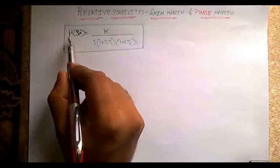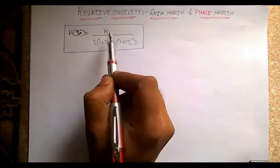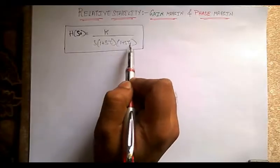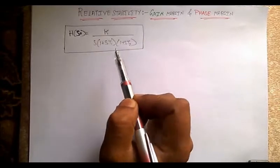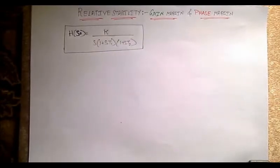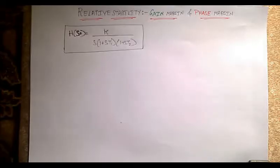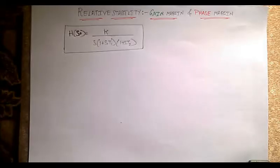Let us consider we are given the open loop transfer function G(s) = K / [s(1 + sT1)(1 + sT2)]. This represents a physical machine in an industrial plant. Let us consider it is giving some error results, causing the resultant product to vary by some amount. We have to control that error so that we can get a good product without any errors. The best way to find these errors is to go for the frequency domain approach.